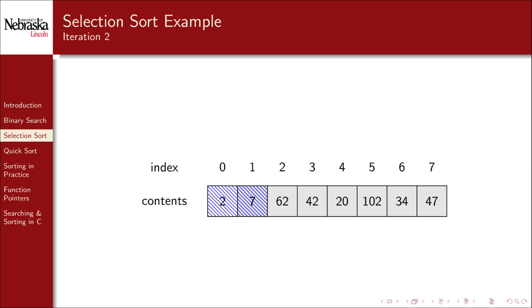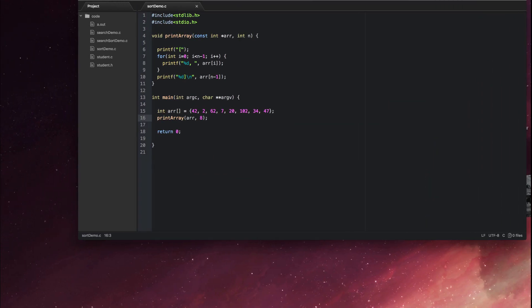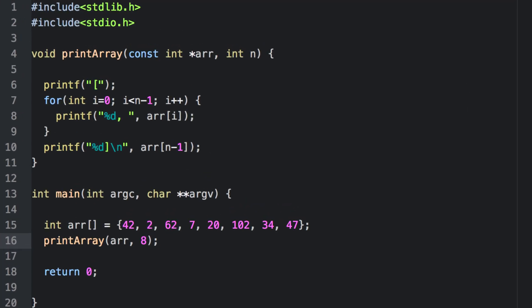Let's actually implement this and test it. Here I've got some starter code. We have a function to print out an array, the same array from our example. Now let's go ahead and implement selection sort.